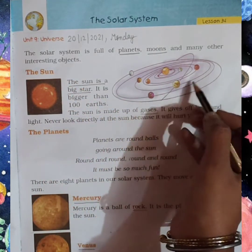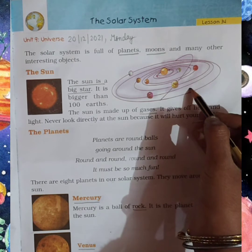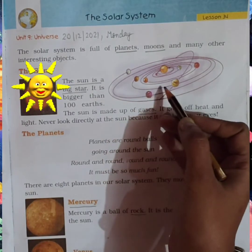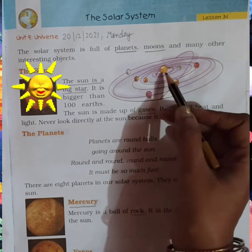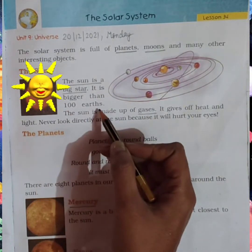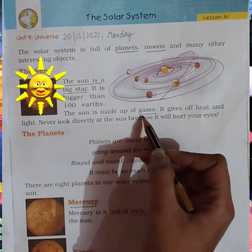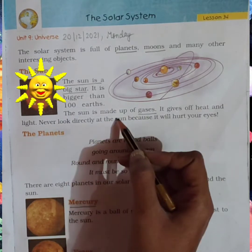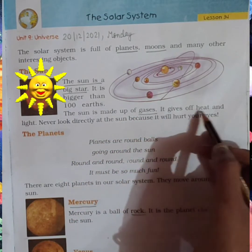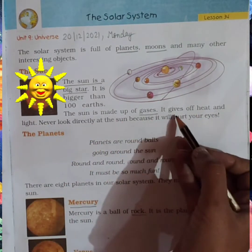As you can see in this picture, this is the solar system. The sun is a big star. Here is the sun — it is bigger than a hundred Earths. The sun is made up of gases. Sun se hume heat aur light milti hai.